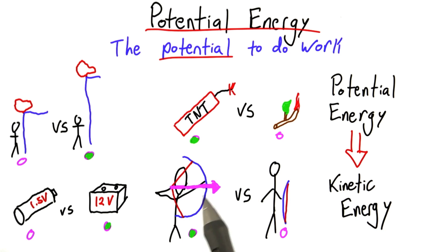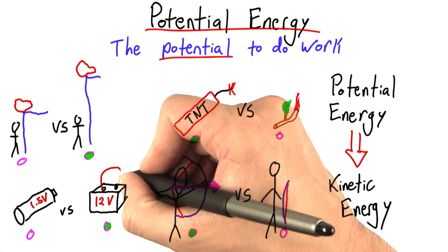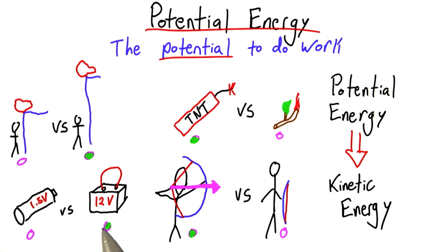If this bow were released, the arrow would fly through the air at high speed. This one's a little harder to see. But if I were to connect a wire between these two terminals, we'd actually get the motion of what's called electrons through the wire.